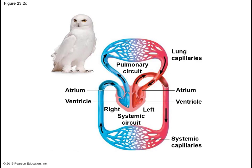In the basic anatomy of the heart, mammals and birds both have four chambers: the two atria at the top — atria is the plural of atrium — and the two ventricles down at the bottom.